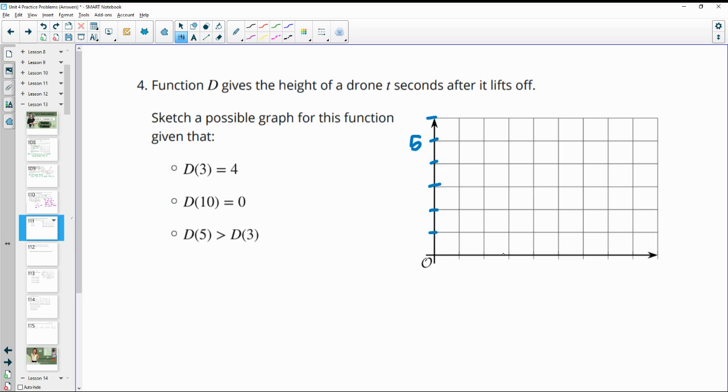And then this has 1, 2, 3, 4, 5, 6, 7, 8, 9. I'm just going to actually add another row to this so that we can get to 10. And I'm going to count by 1s here as well, so then this would be 5. So D(3), at a 3 input, our output needs to be 4. So I'm just going to plot that point. The second one says that at 10 the output is 0, so all the way over here at 10 the output is 0. So our graph is going to hit right there.